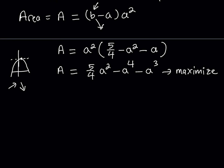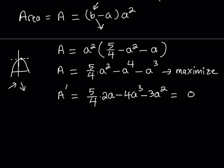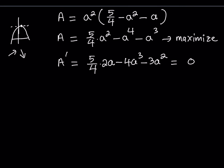I'll write the derivative as A prime since a is the only variable, so we know what to differentiate with respect to. Using the power rule: the derivative of 5 fourths a squared is 5 halves a; the derivative of negative a to the fourth is negative 4a cubed; and the derivative of negative a cubed is negative 3a squared. So A prime equals 5 halves a minus 4a cubed minus 3a squared. I want to set this derivative equal to zero to find where it changes sign. Since this is a polynomial it's a smooth curve, and notice it's a cubic equation that we can factor.